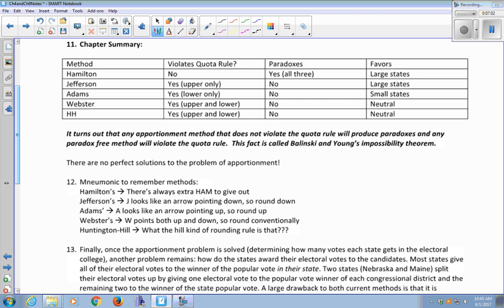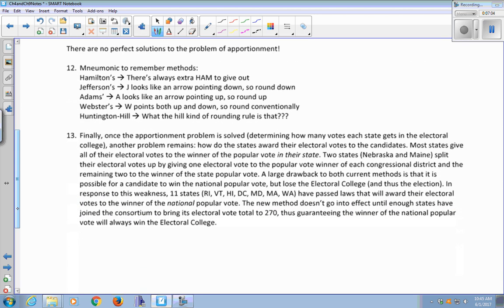So here's a brief mnemonic to help you remember the five methods. Hamilton's method, there's always some extra ham to give out. Jefferson's method, that J kind of looks like an arrow pointing down, that's the round down method. Adam's method, the A looks like an arrow pointing up, that's the round up method. Webster's, we've got a W, it points both up and down, that's your conventional rounding. Huntington Hill, what the hill kind of rounding rule is that? That's crazy. That's the one with the geometric mean, and you get a slightly different cutoff value than 0.5.